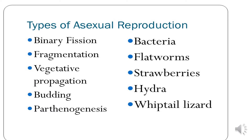The types of asexual reproduction are: binary fission, fragmentation, vegetative propagation, budding, and parthenogenesis.